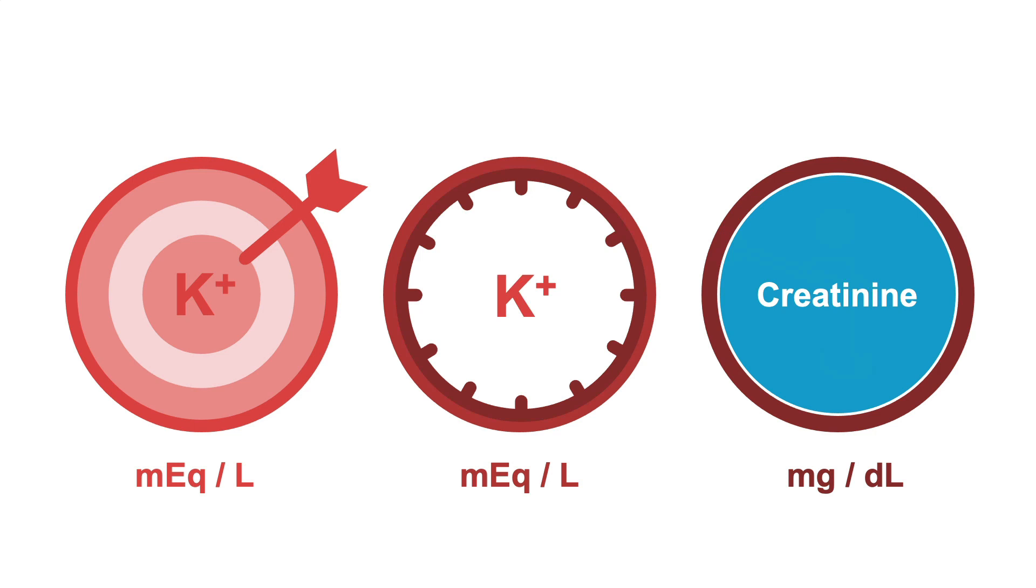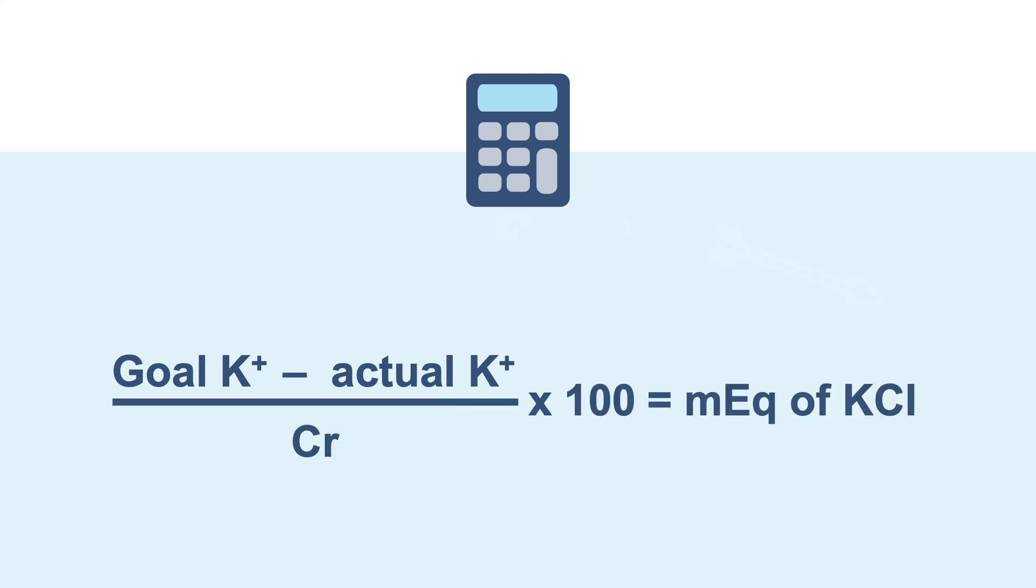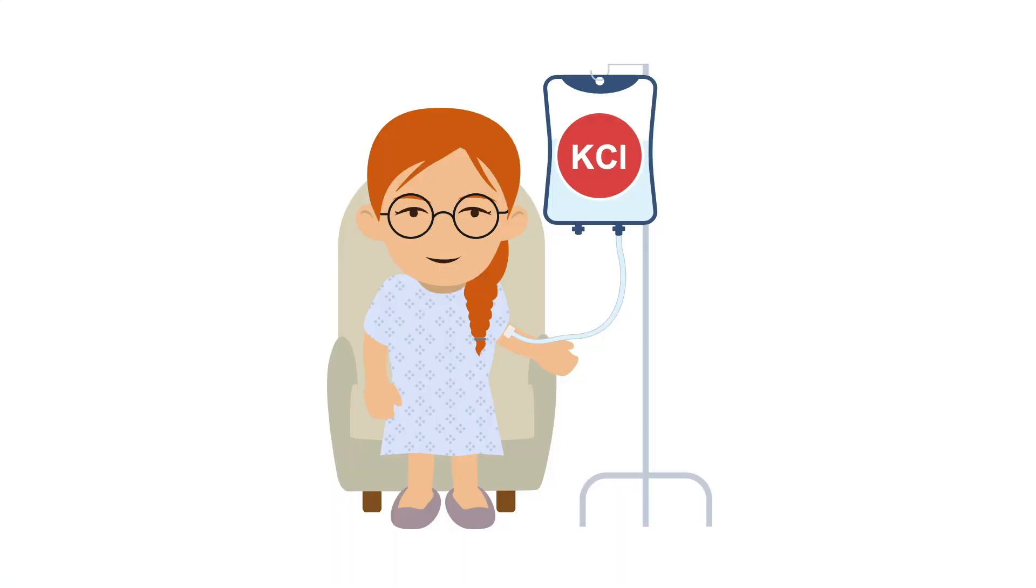This calculation works only when your units match the ones shown here. There are many formulas that can be used to calculate potassium chloride, or KCl, but here is the one I use most commonly. Goal potassium minus actual potassium divided by the patient's creatinine, then multiply by 100. This will give you the milliequivalents of potassium chloride to administer to your patient to get to your goal.